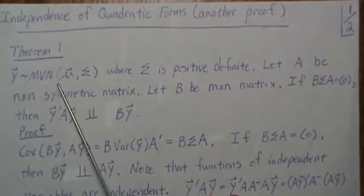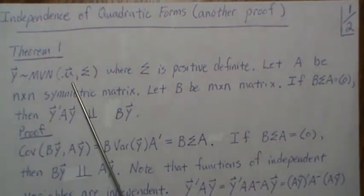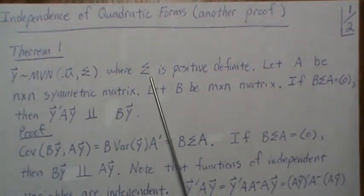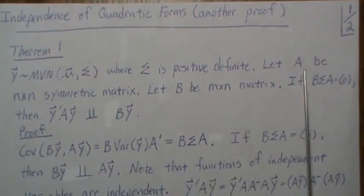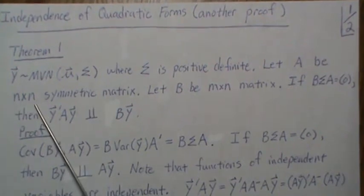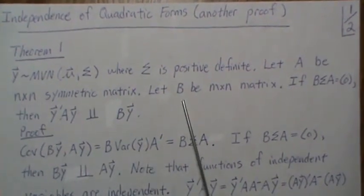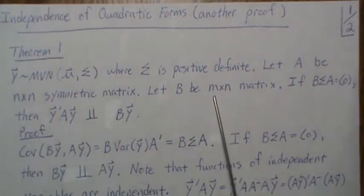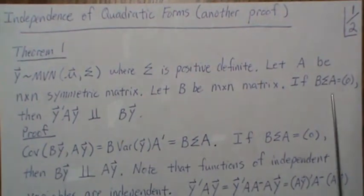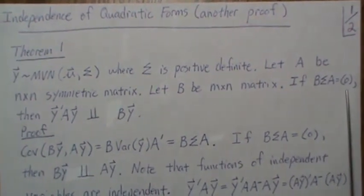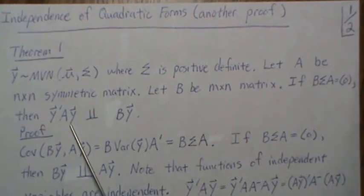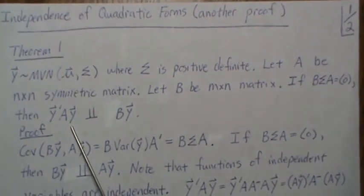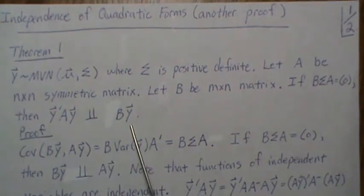Let's let Y be a multivariate normal with mean vector μ and Σ. Σ is positive definite. Let A be an n by n symmetric matrix and let B be an m by n matrix, and if BΣA equals zero, then the quadratic form Y'AY is independent of BY.